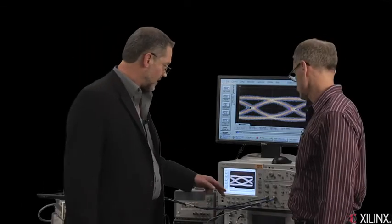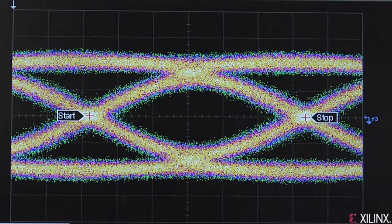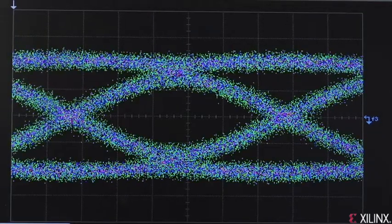So the scope is triggered directly here, looking at the differential data, and we see an eye pattern that is remarkably clear in the middle for a 28 gigabit system. Can you press the restart button for us? That's right. And let's just accumulate a little data so we see that it's a live system.